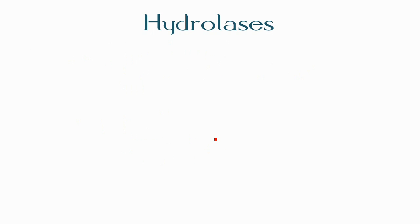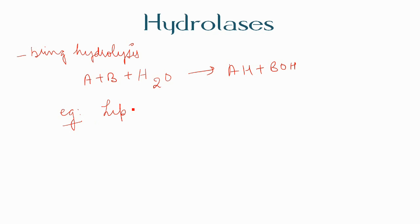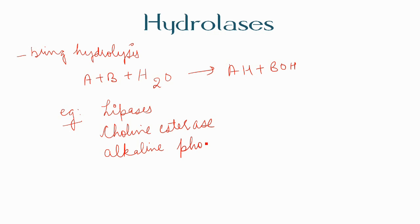The next category is hydrolases — enzymes that bring about hydrolysis of various groups. A reaction involving hydrolases: AB + H₂O → AH + BOH. Hydrolysis is taking place. Examples of hydrolases include lipases, choline esterase, alkaline phosphatase, and pepsin.